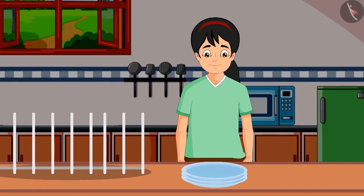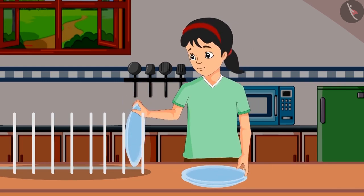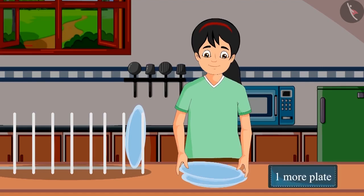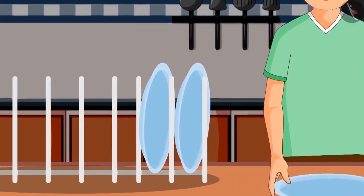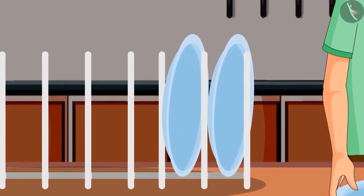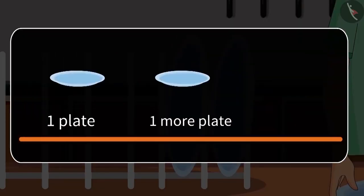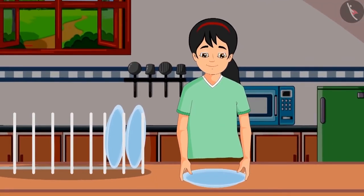Pinky set the plates in the kitchen. She picked up one plate and set it carefully on the shelf. Then she picked up one more plate and set that on the shelf too. So friends, how many plates are there on the shelf? That's right — one plate and one more plate is two plates.